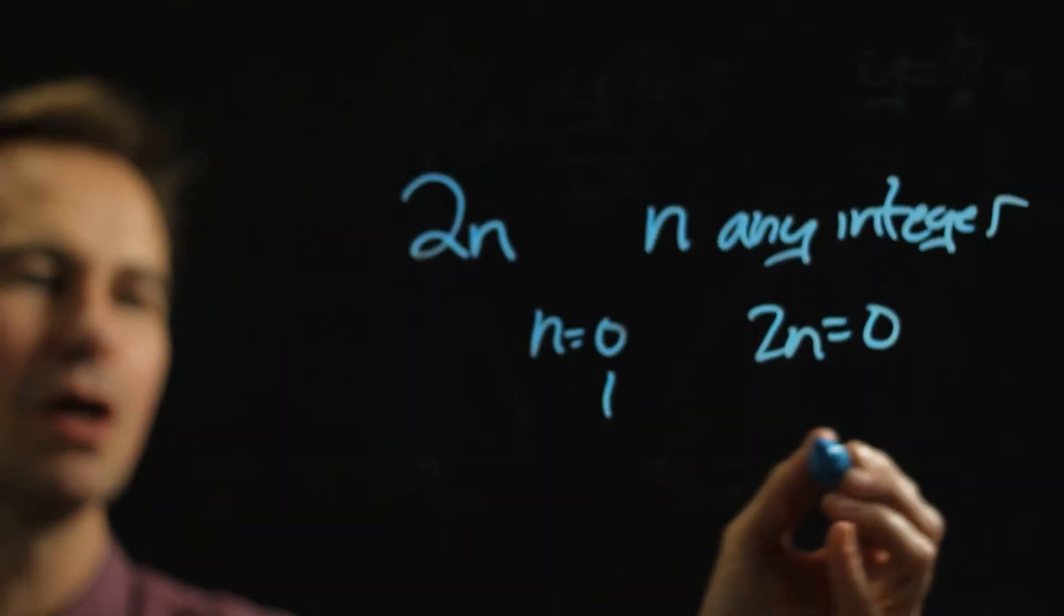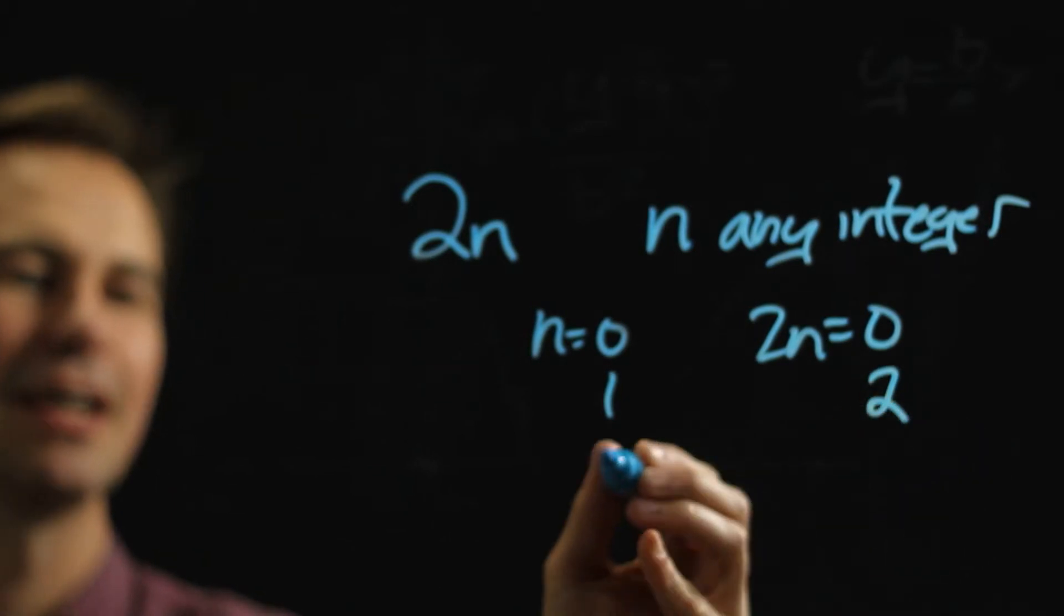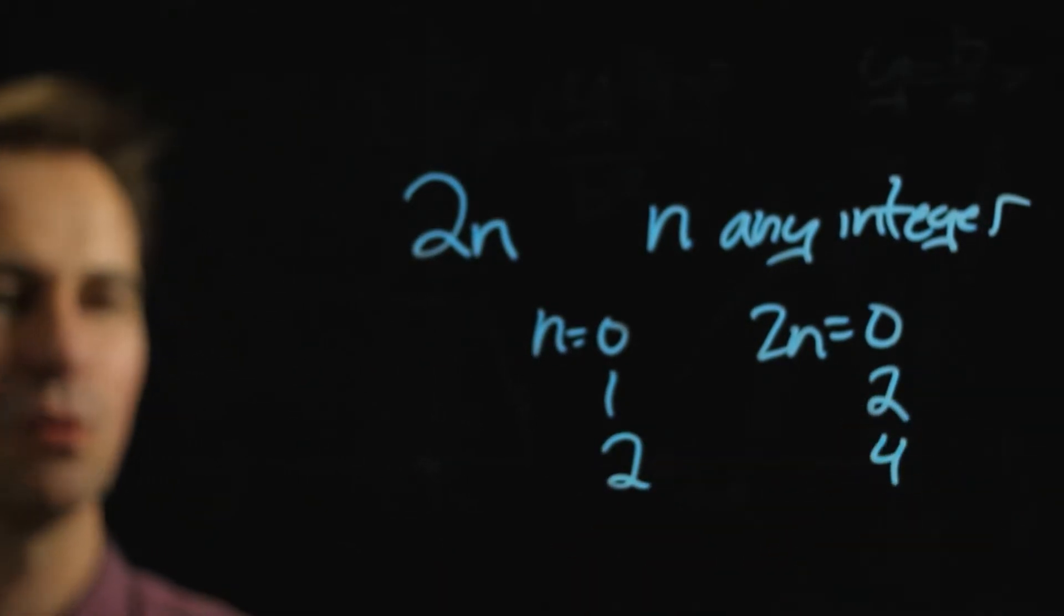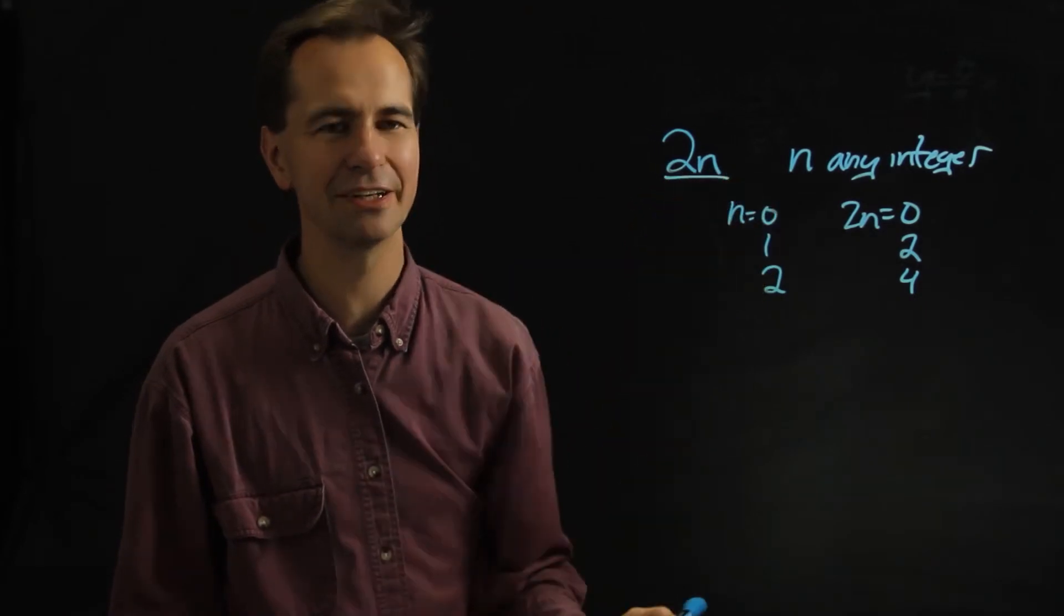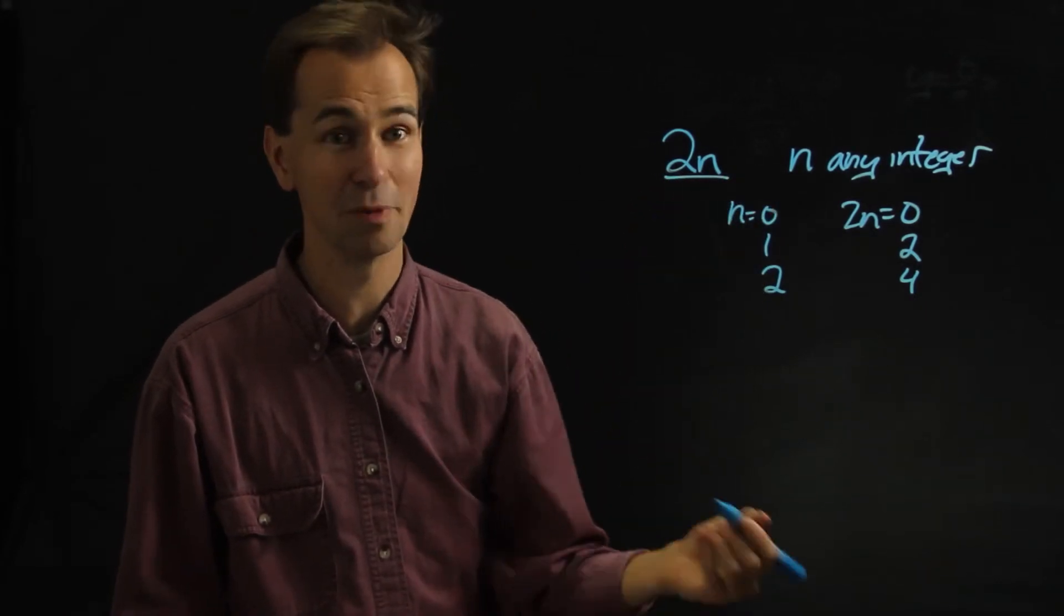But if n is 1, 2n is 2, and if n is 2, 2n is 4, and so on. So 2n is always guaranteed to be an even integer no matter what.